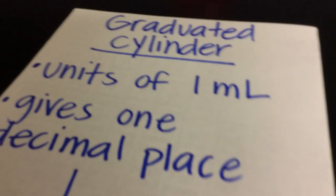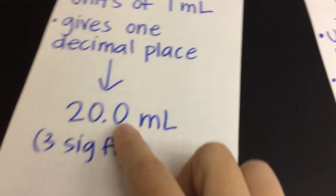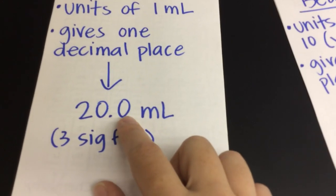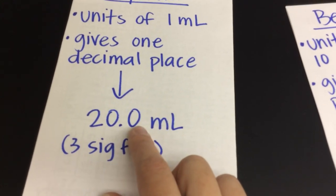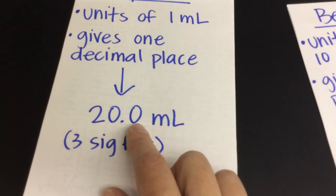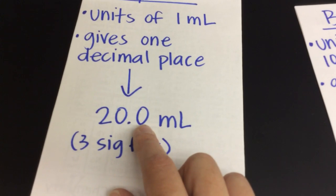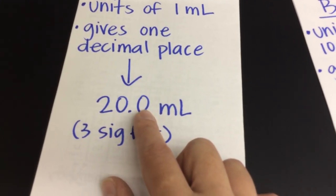I know with confidence that it is 20, and then I estimate one digit beyond that. So if it's directly on 20 with my estimation of that last decimal place, I'm going to assume it's directly on the zero. That gives me three total significant figures.